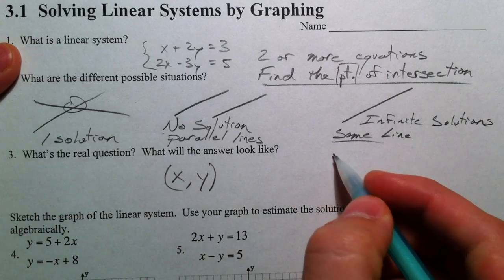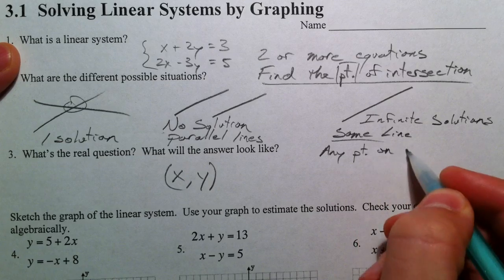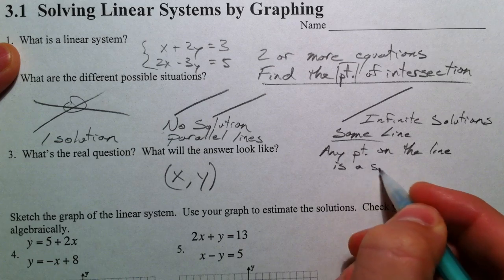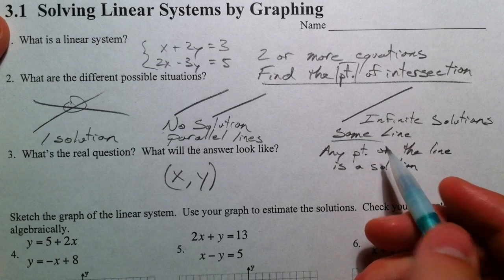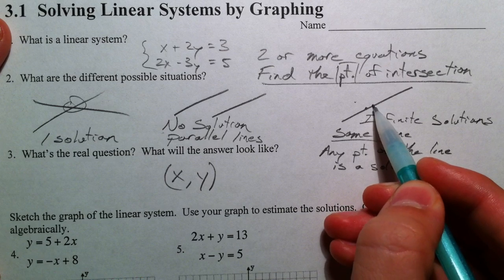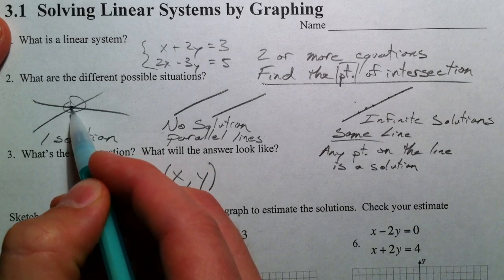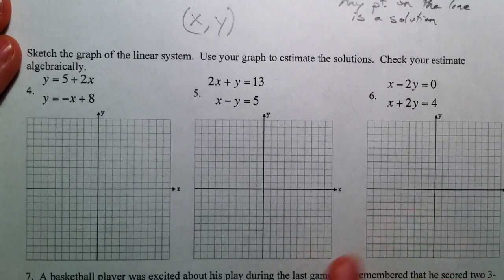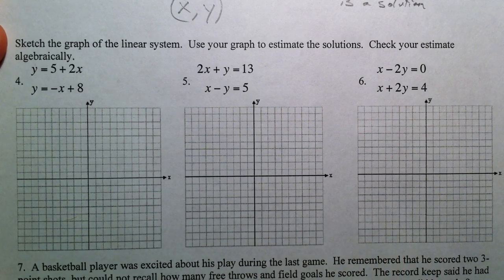Meaning they're the same line. Any point on the line is a solution. Infinite solutions does not mean any answer is correct, because if you're not on the line, that's incorrect. But if you are on the line, every point here is a solution. Whereas if they just intersect, there's only one point that both lines have in common. So we're going to talk about finding these points graphically first, and then we'll talk about finding them algebraically.